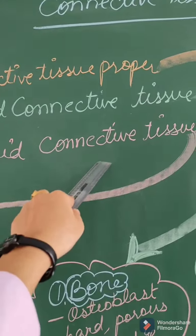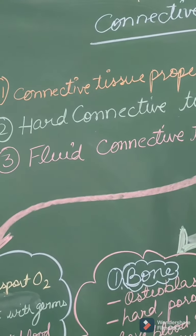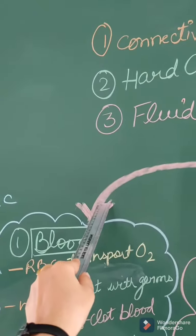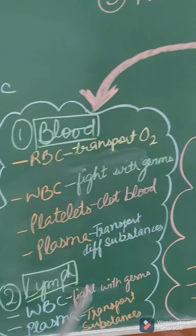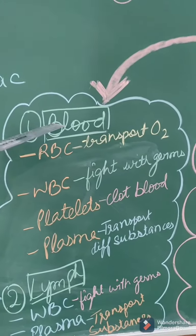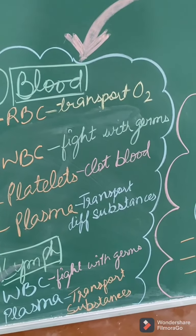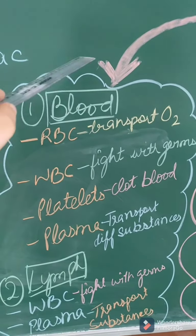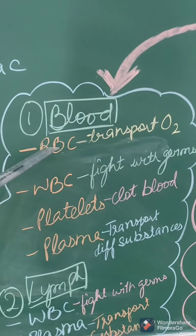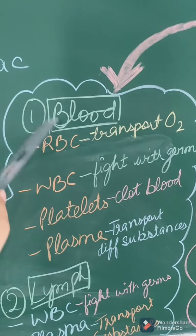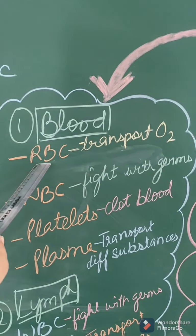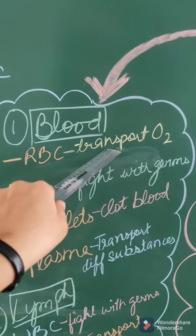Next we have fluid connective tissue, the third type of connective tissue. Fluid means liquid, so the tissue present in liquid form inside our body is blood and lymph. Let's start with blood — it is a red colored fluid present in our body. It has three types of cells and one is plasma. First is RBC; they transport oxygen.